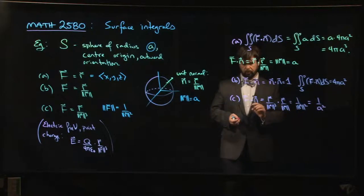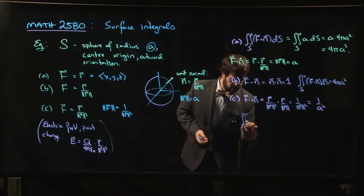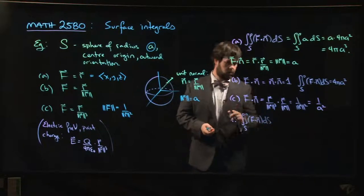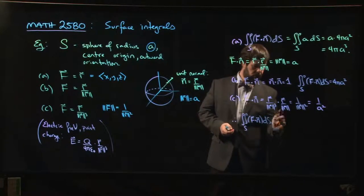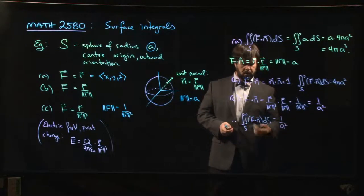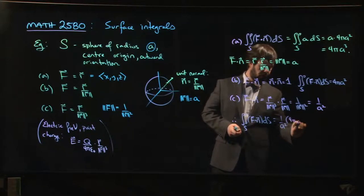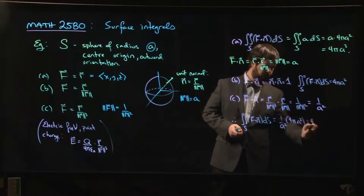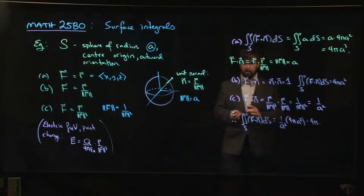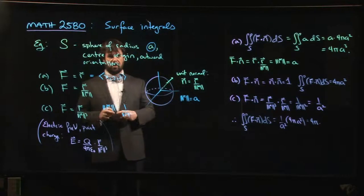That means the integral in this case is 1 over A squared times the area of our sphere, 4 pi A squared. We get 4 pi on the nose. Notice that it doesn't depend on the radius.